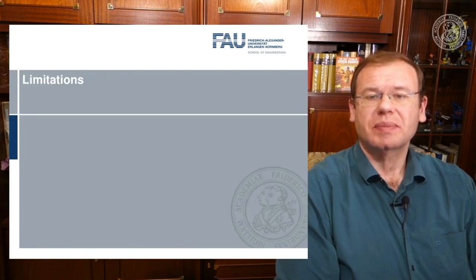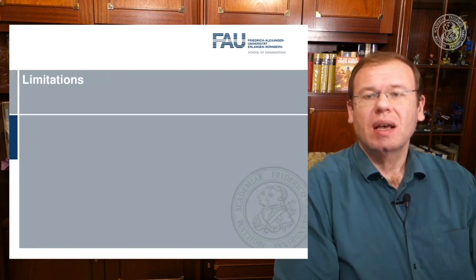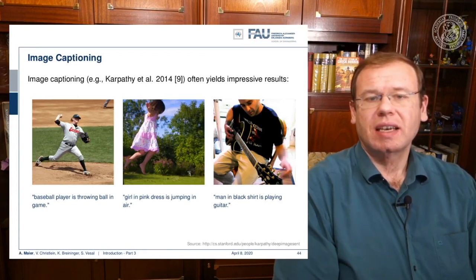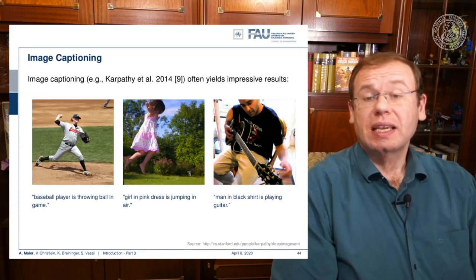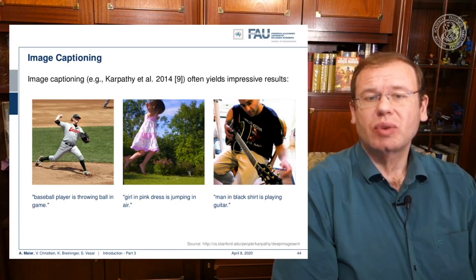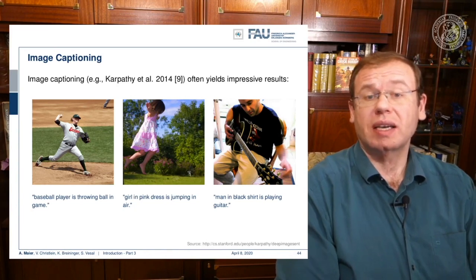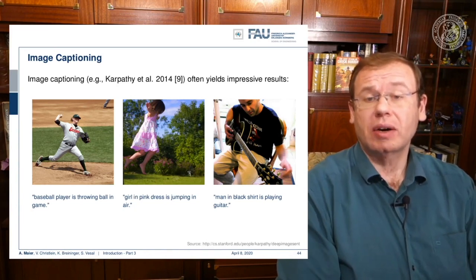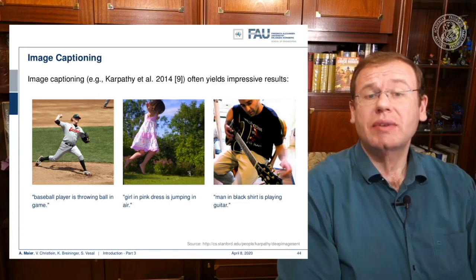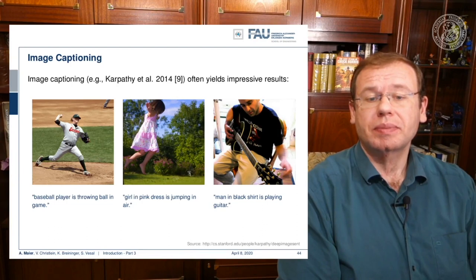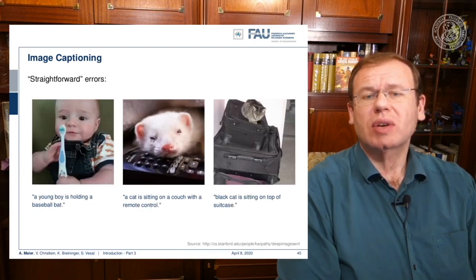Of course, there are some limitations. For example, take tasks like image captioning. Here on this slide, you see really impressive results. You can see that the networks are able to identify a baseball player, a girl in a pink dress jumping in the air, or even people playing the guitar. So let's look at some errors.